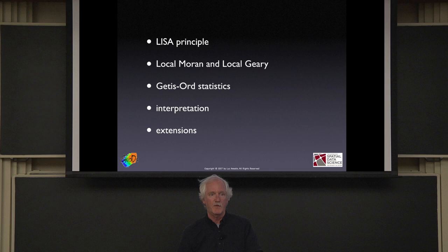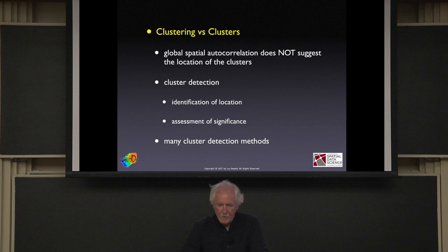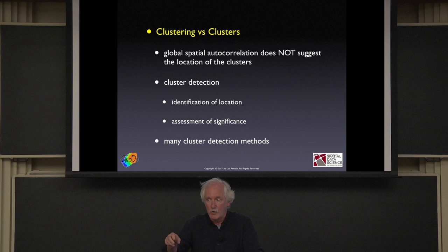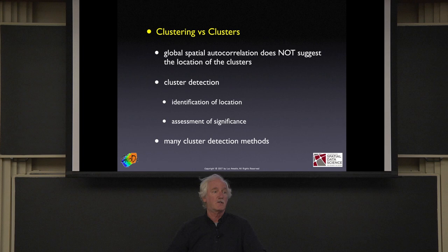The principle of a local indicator of spatial association: the global measure of spatial autocorrelation does not tell you where the clusters are. It tells you that the pattern in the data as a whole is not something you would expect under spatial randomness, but it doesn't tell you where or why. Cluster detection really wants to know where's the action — where are the hot spots, where are the cold spots? That's really what it's about in an exploratory sense.